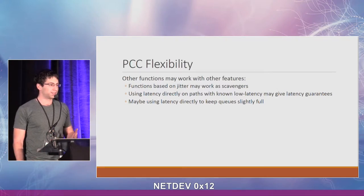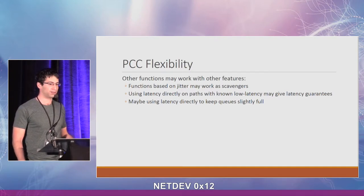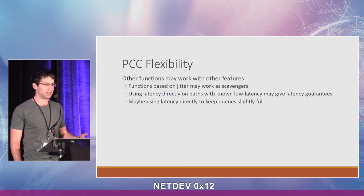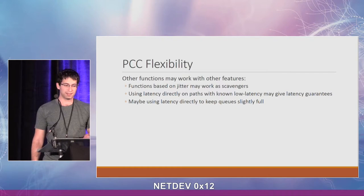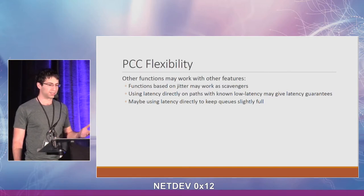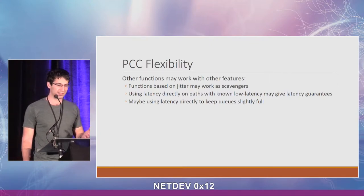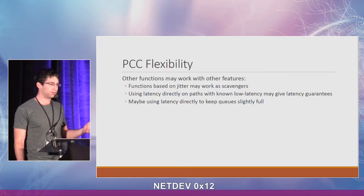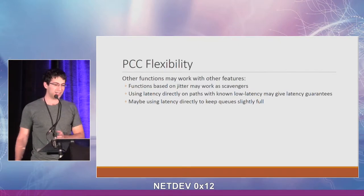These aren't the only utility functions in mind — PCC is really flexible, so you can plug in different utility functions. Other utility functions we are thinking about include rate scavengers, which try to utilize links and back off on the first sign of competition. Using jitter could help with that. Other utility functions may use latency directly instead of the latency change, which may give guarantees about latency when the network is relatively well-known, or to keep buffers slightly full in wireless scenarios where capacity suddenly changes.